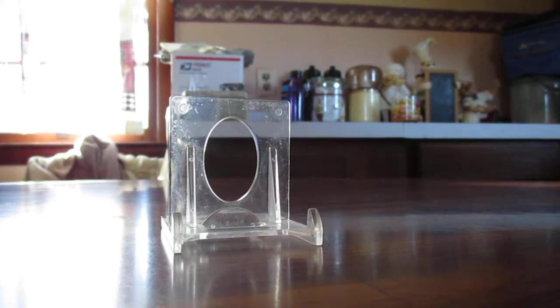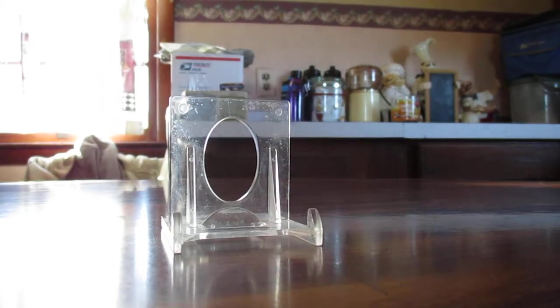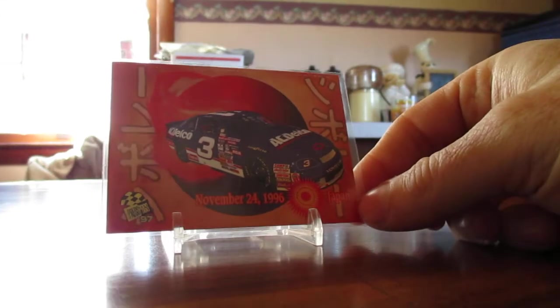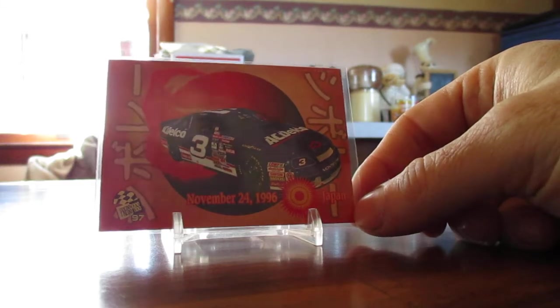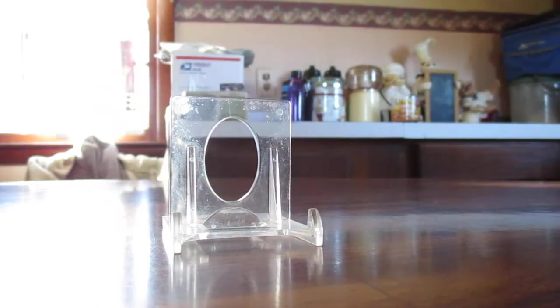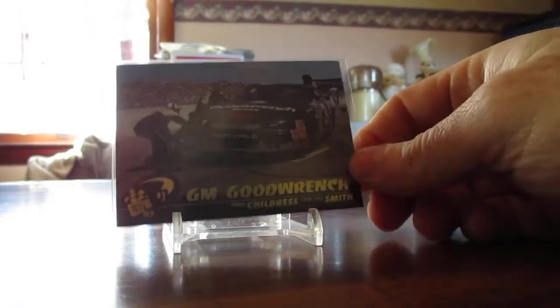We got the number three. Here's an early race card from Dale Jr when they had that race in Japan. He had that number three AC Delco. I believe that might have been the first time him and his dad raced in the same race, competed in the same race.